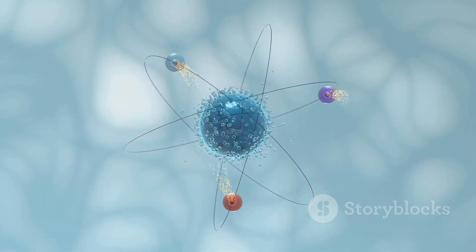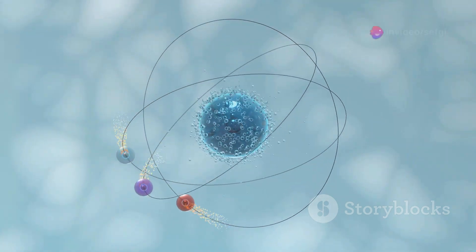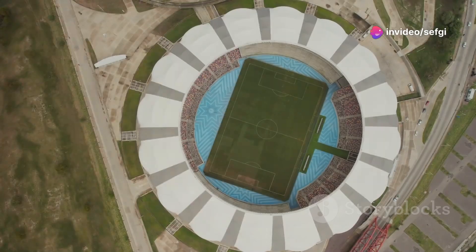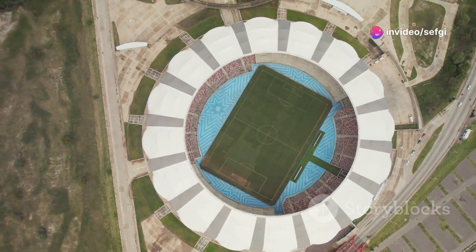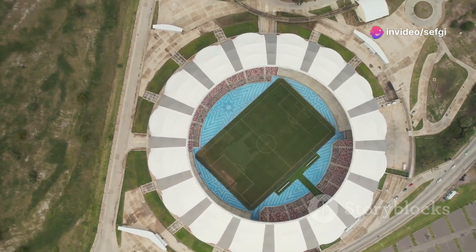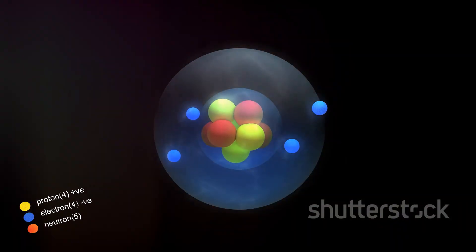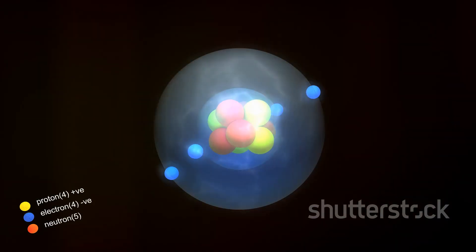The atom's core, the nucleus, is about 100,000 times smaller than the atom itself. If the atom were a football stadium, the nucleus would be like a marble sitting on the 50-yard line. Despite its tiny size, the nucleus contains almost all of the atom's mass.